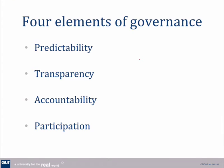One way to think about governance is through four elements. In terms of predictability, what we're talking about is that our system and its outputs are predictable — everything from the system of governance through to the systems in an organisation to ensure we get predictable performance.